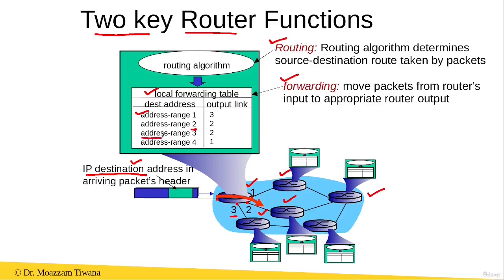Similarly for address range 3, if the destination IP address matches address range 3, it is again output on interface 2. And if the destination IP address matches address range 4, it is output on interface 1.